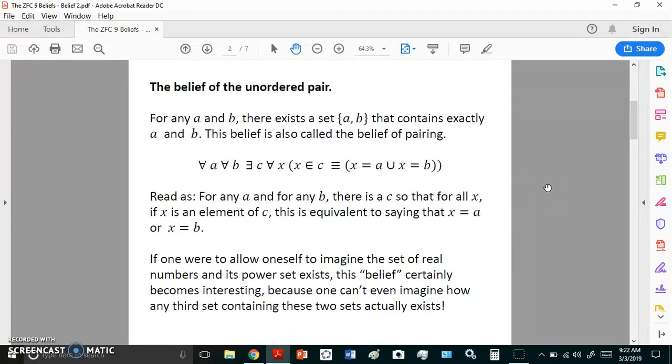If one were to allow oneself to imagine the set of real numbers and also that its power set exists, then this belief certainly becomes quite interesting because how do you create a third set from the set of real numbers and its power set? That's where George Cantor, the father of all mathematical cranks, comes in with these different levels of infinity. This axiom is fundamentally false, especially in terms of the fact that there is no such set as real numbers, and if there were, then there would be no third set with real numbers and its power set.